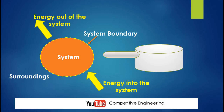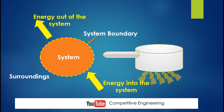Everything outside the pan is the surroundings. Now I am going to heat this pan using a burner. I am using heat energy to heat the pan, so energy is going from surroundings to the system — this is energy into the system.